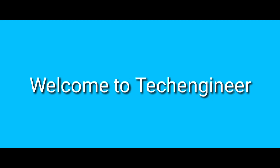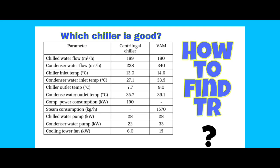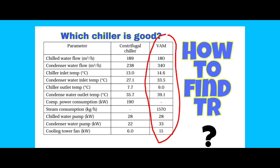Hi guys, welcome to Tech Engineer. I am Shiva. Today we will talk about two types of chillers: centrifugal chiller and VAM chiller. We have two datasets and parameters displayed.